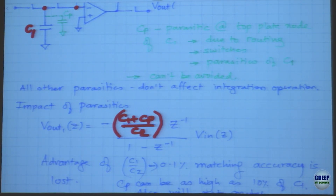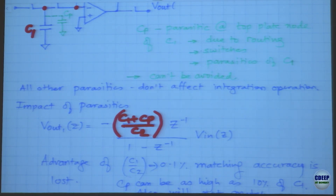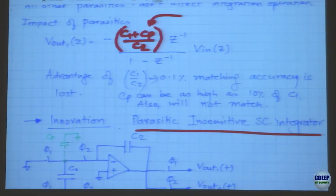C1 and C2 are extremely accurate matched capacitors, whereas Cp is unwanted parasitics that cannot be controlled — it could be routing, switch diffusion capacitance — and these are nonlinear. This makes the integration coefficient inaccurate, varying with process and layout. We cannot lose the accuracy advantage of switch cap filters because of this problem. The big innovation in switch caps is the parasitic-insensitive switch capacitor integrator.